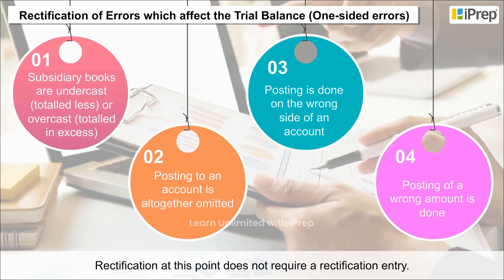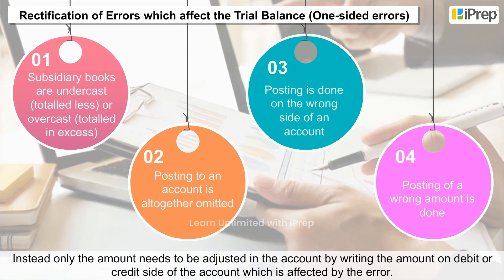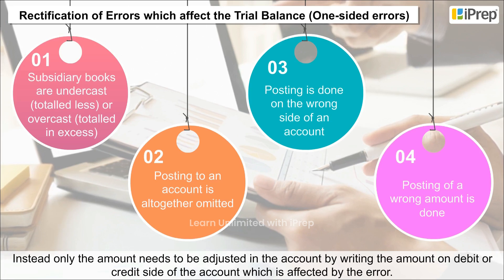Rectification at this point does not require a journal entry. Instead, only the amount needs to be adjusted in the account by writing the amount on the debit or credit side of the account which is affected by the error.